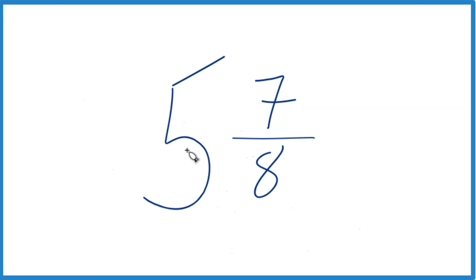You take the whole number, the 5, times 8. 5 times 8 is 40, and you add that to 7. 40 plus 7, that equals 47. And that's going to be the numerator here.